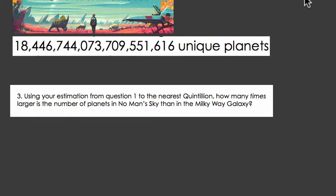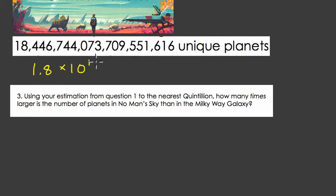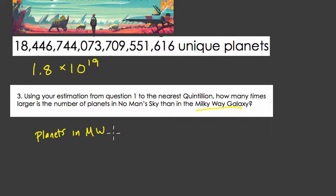So again, we're trying to think about the number of unique planets available in this video game, No Man's Sky. One way to compare that, as we did in the last video, was to look at how this number — 18 quintillion, which we rounded to 1.8 times 10 to the 19th power — compares to the number of planets in the Milky Way, our galaxy. There are about 100 billion planets. How does this compare to 1.8 times 10 to the 19th?